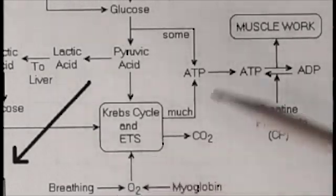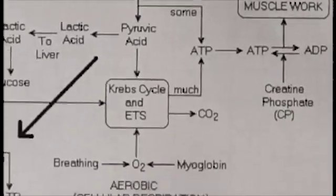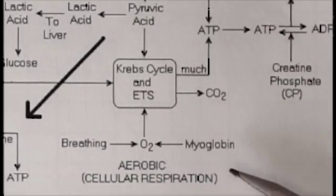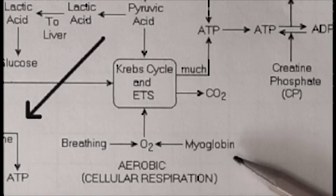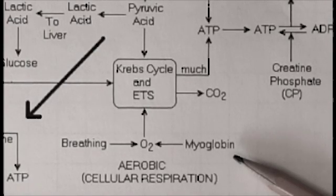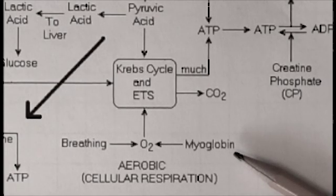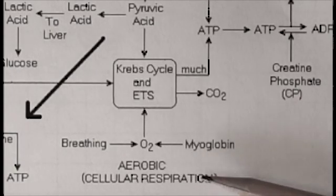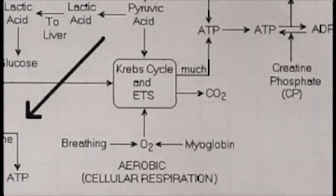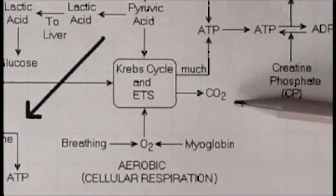Where does the oxygen come from? Well, it comes from breathing. However, muscles also contain another molecule called myoglobin. Myoglobin is a temporary storage form of oxygen. Now, what color is fresh meat? Red. What color is blood? Red. Why is blood red? Because of the presence of hemoglobin. Similarly, myoglobin binds to oxygen and gives the muscle its red color. This is an aerobic process — that is, oxygen is required. Carbon dioxide is produced as a waste product.